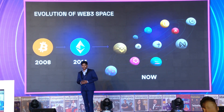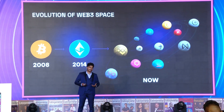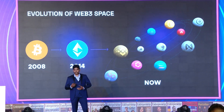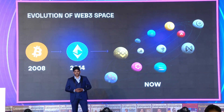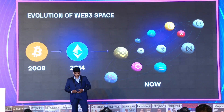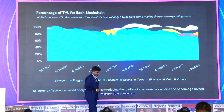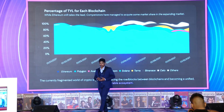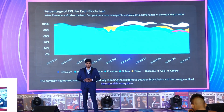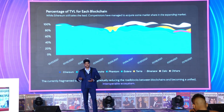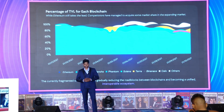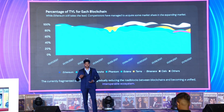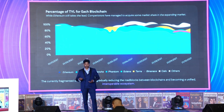But now, if you look at the ecosystem, there are a lot of layer one and layer two blockchains out there, each having their own characteristics. Both developers and users are pretty confused about which platform to use. Ethereum, being the first player in the market, had its monopoly for a long time, but now the market share is getting distributed among a lot of chains, with bridges making asset transfers easily possible between them.